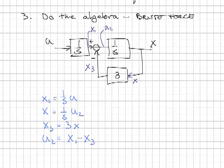The final step, the brute force part, is to do the algebra. I'm going to do some substitutions. x is equal to 1 over s times u2, but u2 is x1 minus x3. I also have that x3 is equal to 3 times x, and I have that x1 is equal to 1 over s times u.